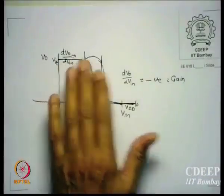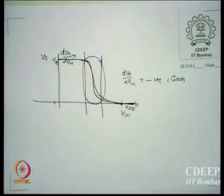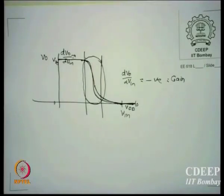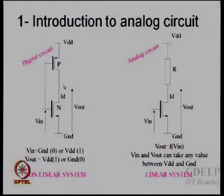In digital, you do not bias the transistor because you are not interested in gain. In analog, you are only interested in the middle gain region — not the two ends. The first fundamental difference between the two circuit types is the input range. This circuit with a resistor load and N-channel device can be used as both inverter and amplifier: as an inverter it allows you to swing rail-to-rail, whereas as an amplifier the input is limited and the bias is set exactly in the gain range.